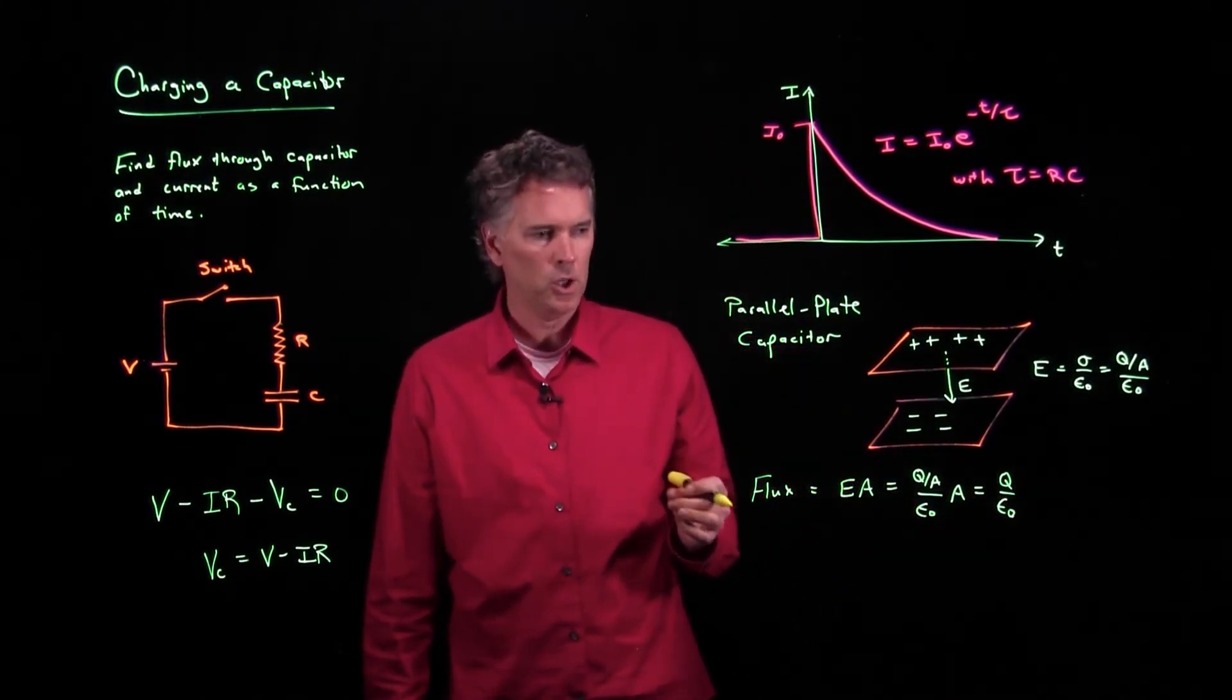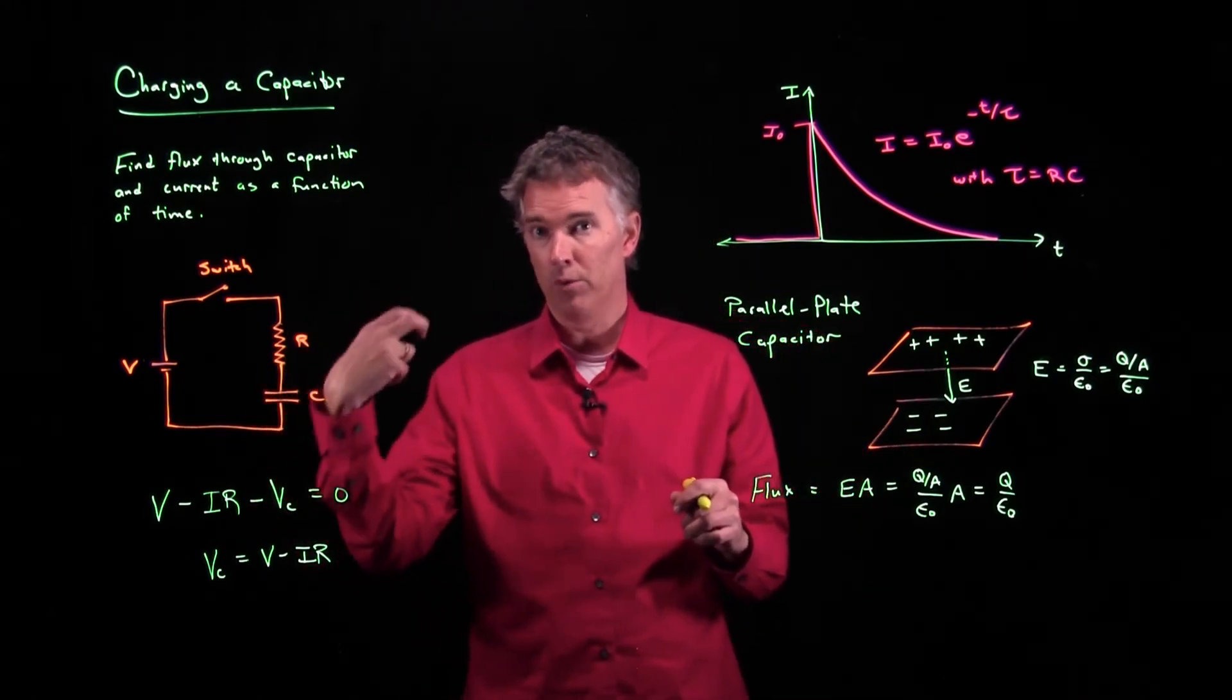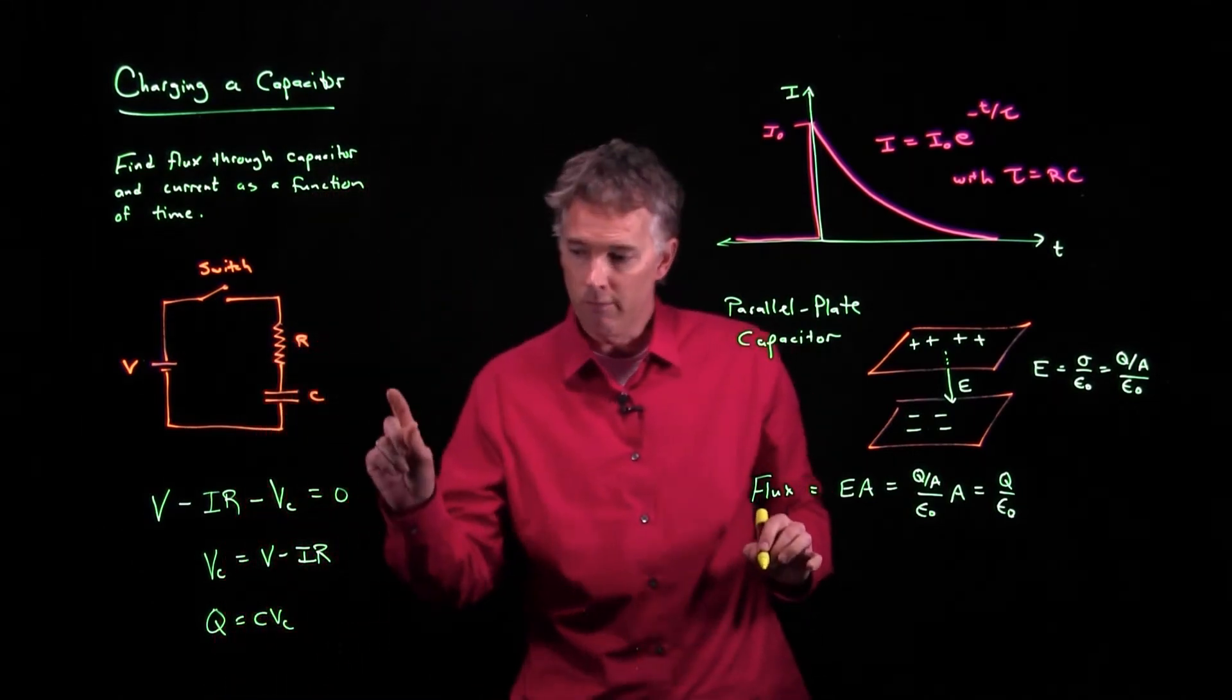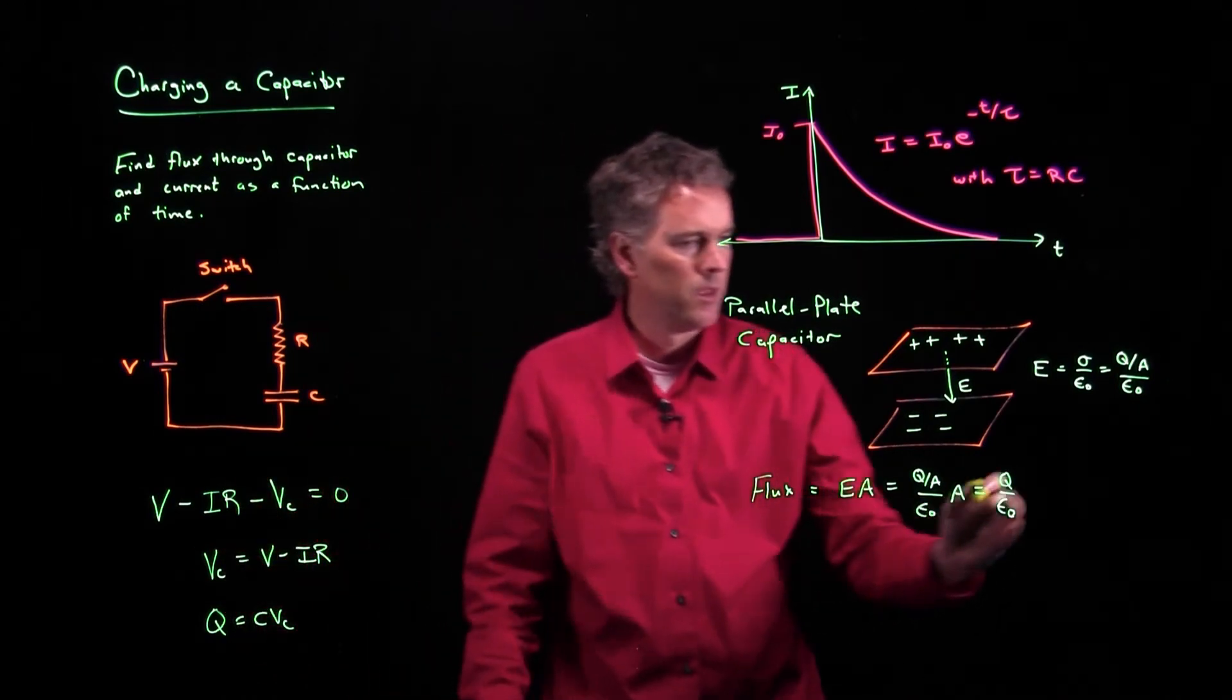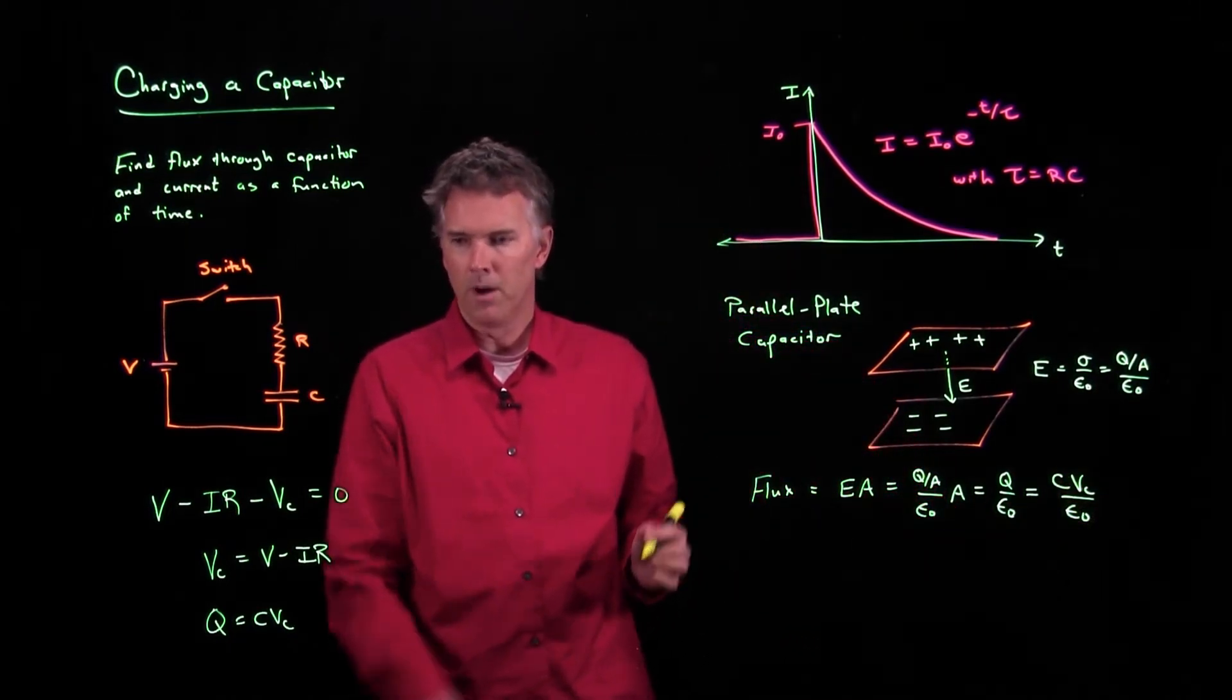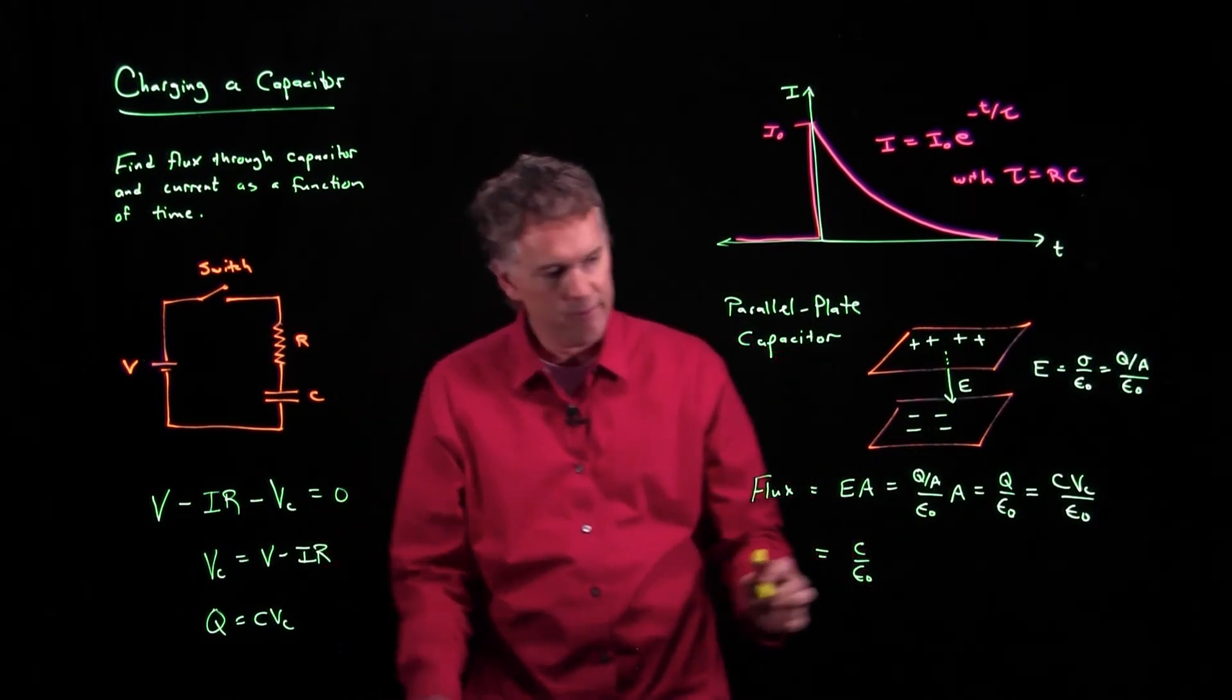Now, we don't really know what Q is yet, but we remember that a capacitor is related to how much charge is on it and the voltage across it by this relationship right here. Q equals CV. The voltage across the capacitor multiplied by its capacitance, that tells you how much charge is on it. So we can put that in right here. We've got C times VC over epsilon naught, but VC is this thing right here, so this becomes C over epsilon naught times V minus IR.